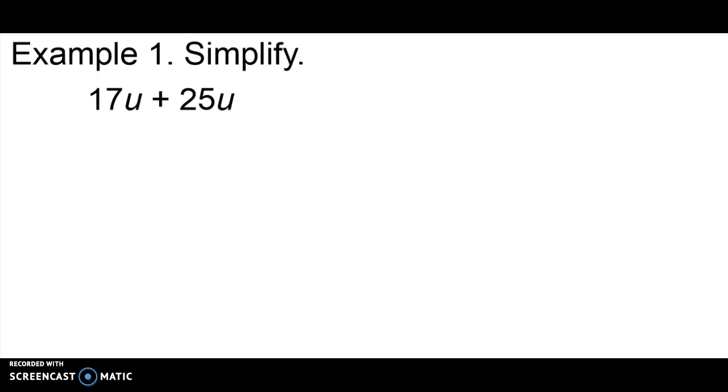So example 1 is asking us to simplify. The expression it gives us is 17U plus 25U. What I'm going to start with is any terms that I see that are like, I'm going to put the same shape and the same color around them. So I'm going to start with my first term. I have 17U. I'm going to give it a blue square.